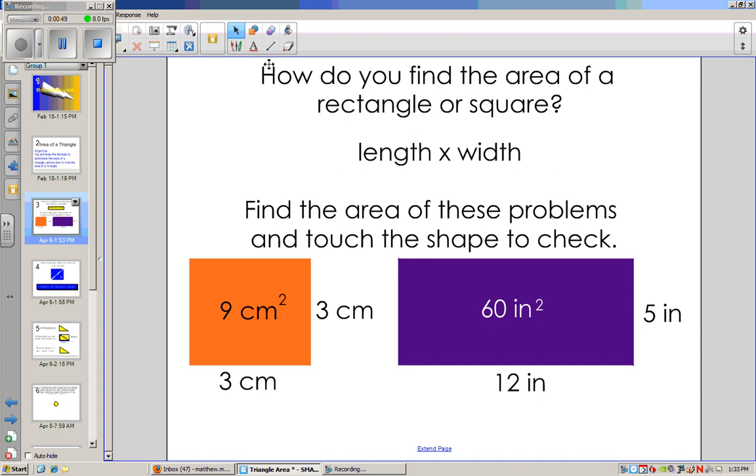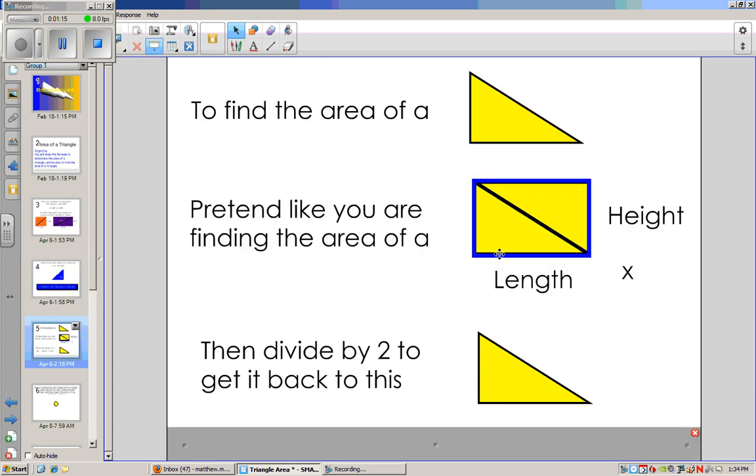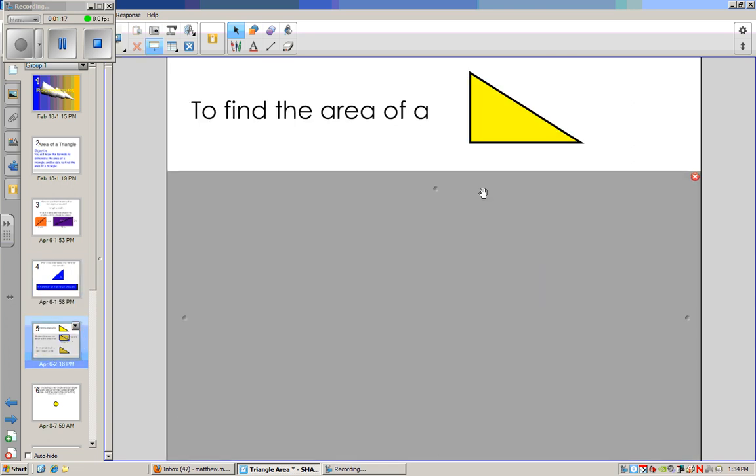Well, a triangle is very similar to that. If we look at these shapes right here, if I were to cut this shape in half, I've got two triangles. Or if I were to cut this shape in half, I have two triangles. So what we're going to do in order to find the area of a triangle, we're going to treat that triangle almost like it's a square or rectangle to start. Because a triangle is really just half of a rectangle or a square.